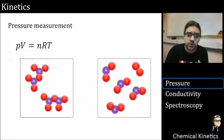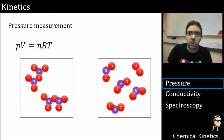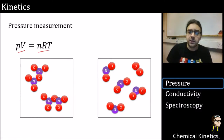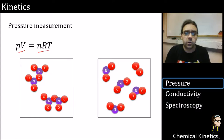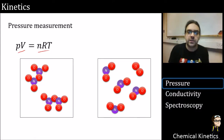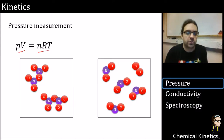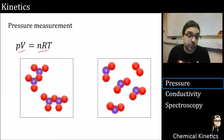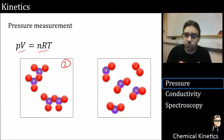Let's start with pressure. Where do we start with pressure? The ideal gas law: PV = nRT. This is one of those equations that should be tattooed on the inside of your eyeballs by the end of your first term as an undergraduate chemist. We can see that pressure is proportional to the number of molecules.